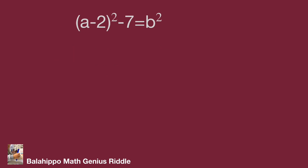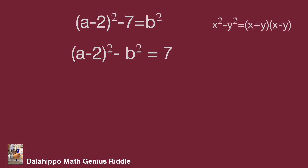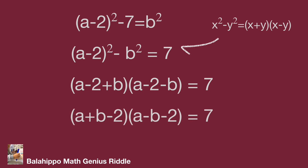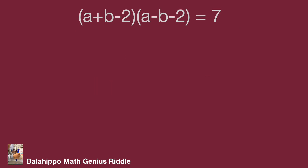Move b squared to the left side and minus 7 to the right side. Then apply the difference of squares formula. Therefore the equation becomes: (a minus 2 plus b) times (a minus 2 minus b) equal to 7, which we adjust as (a plus b minus 2) times (a minus b minus 2) equal to 7.